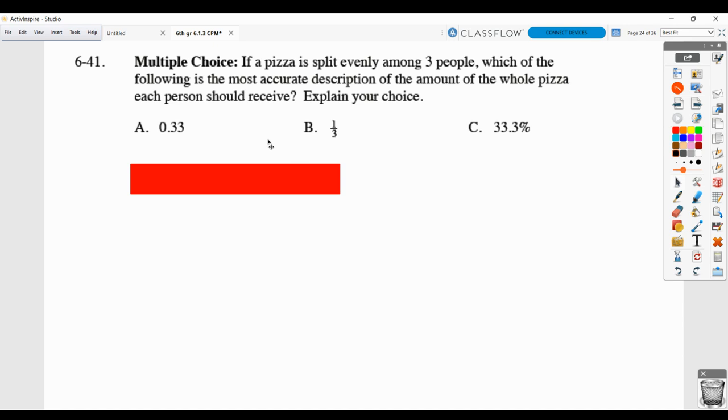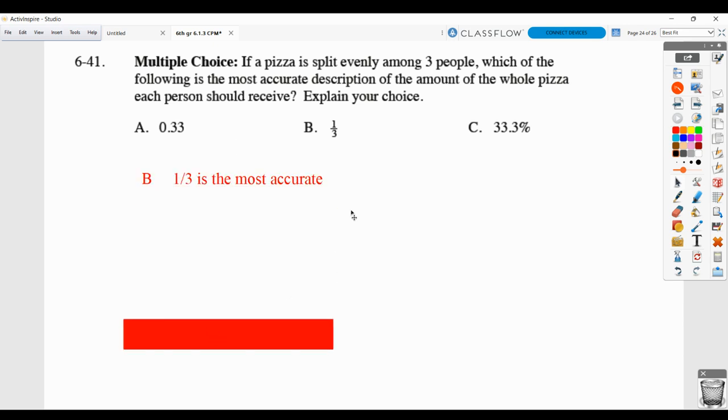Here, the answer that is the most accurate is B. And the reason 1/3 is the most accurate is because 1/3 as a decimal is actually 0.3 repeating, which is close to 33 hundredths, but not exactly the same. Same thing here. The percentage for 1/3 is actually 33.3 repeating percent, which is close to 33 and 3/10ths percent, but not quite. So the most accurate is simply 1 pizza divided by 3 people means everybody's getting 1/3.